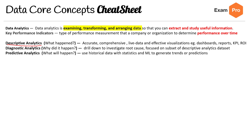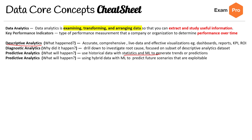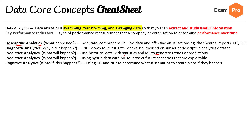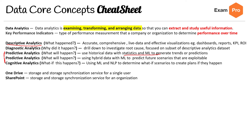Prescriptive analytics asks what will happen and uses hybrid data with ML to predict future exploitable scenarios. Cognitive analytics asks what if this happens — using ML and NLP to determine what-if scenarios and create plans. These types are all similar; the difference is the lens and reason why you're doing the analysis. OneDrive is a storage and synchronization service for a single user. SharePoint is a storage and synchronization service for an organization. And that is it for data core concepts.